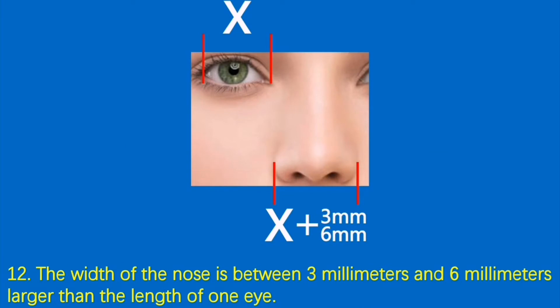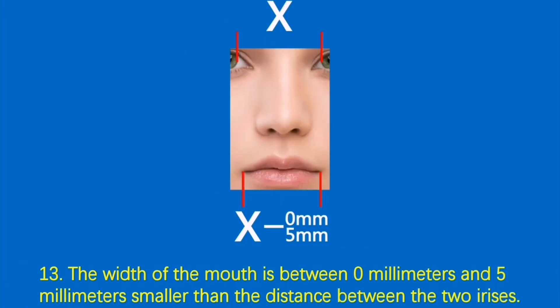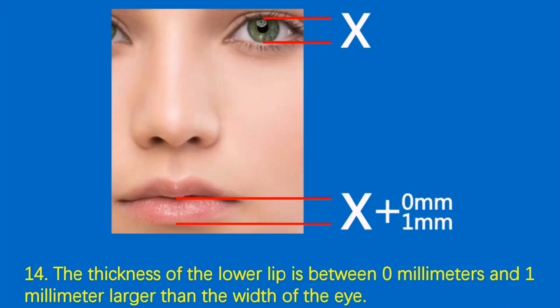12. The width of the nose is between 3 millimeters and 6 millimeters larger than the length of one eye. 13. The width of the mouth is between 0 millimeters and 5 millimeters smaller than the distance between the two irises. 14. The thickness of the lower lip is between 0 millimeters and 1 millimeter larger than the width of the eye.